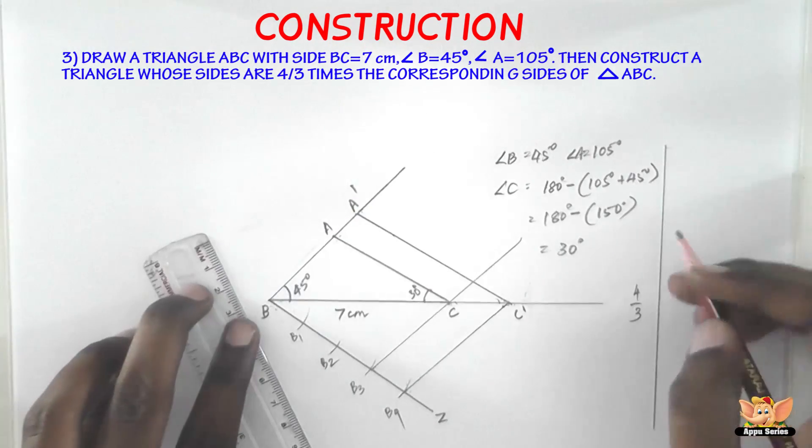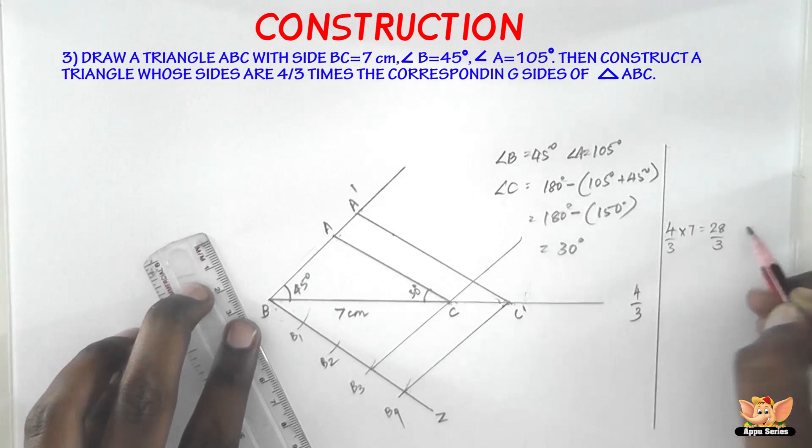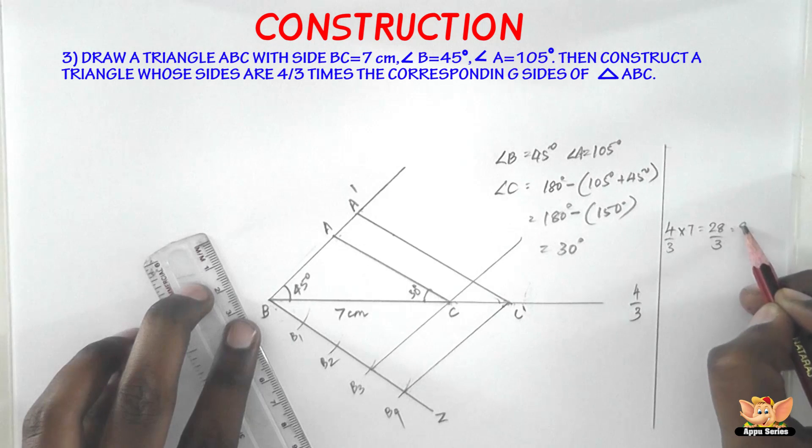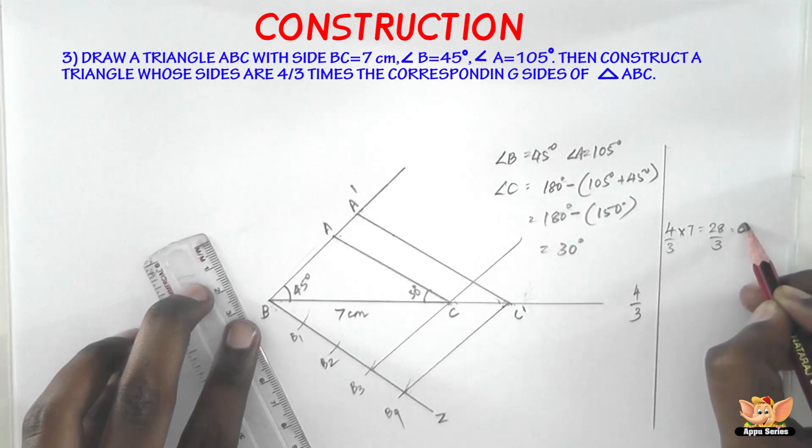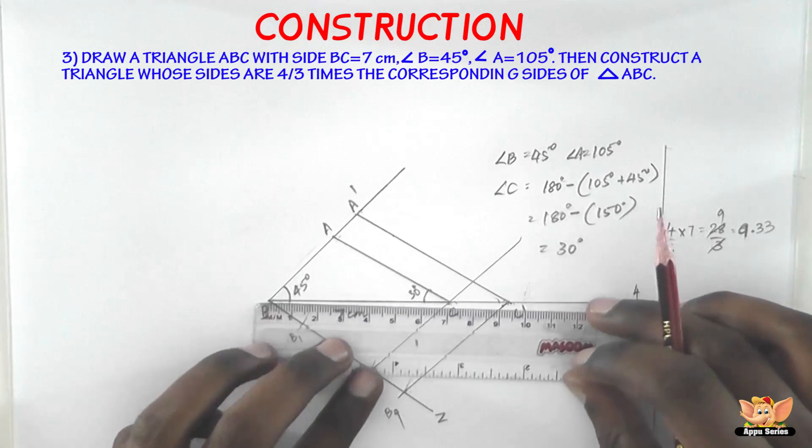So let's say use the space for working out. So 4 by 3 times 7 is going to be 28 by 3. This is approximately going to be 9, 9.3. 3 goes 9 times in 28. There's one remainder which is 0.33333.